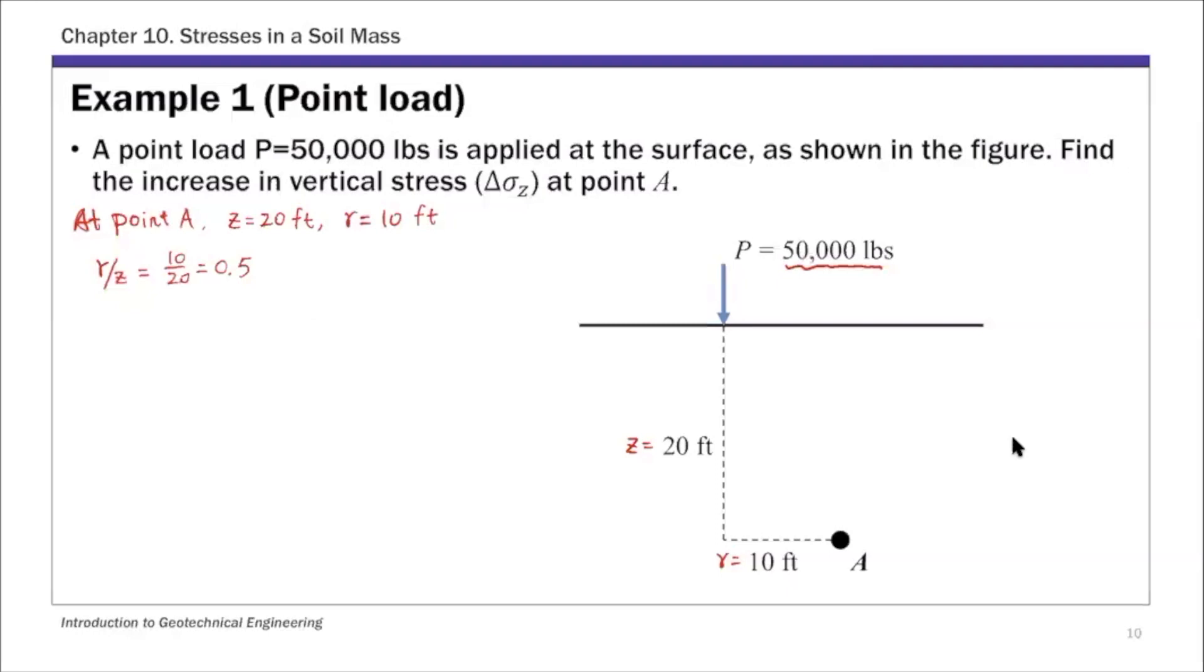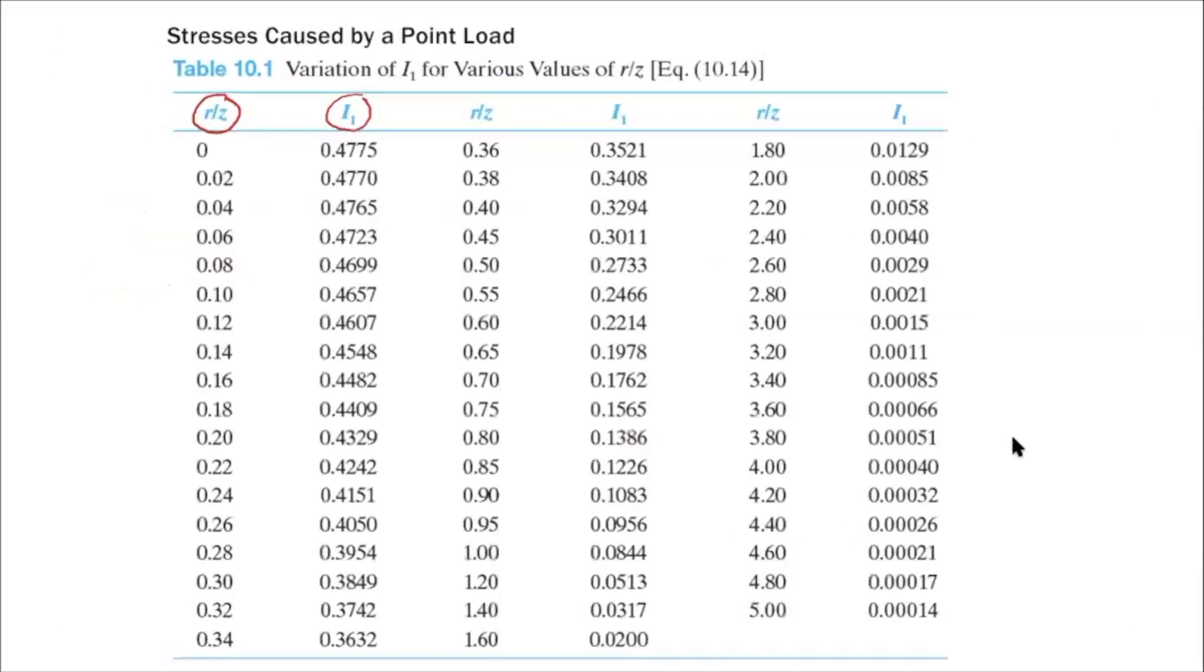Then we're going to use that table to find the influence factor I1. Let's go to table 10.1. From this table, for R over Z of 0.5, the corresponding I1 value is 0.2733. That's the influence factor I1.